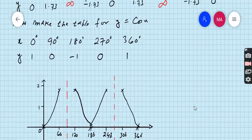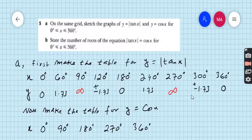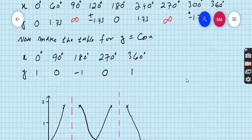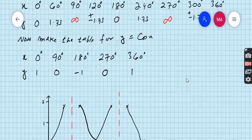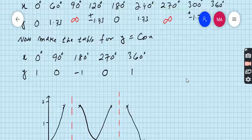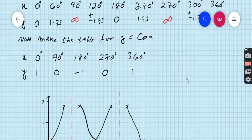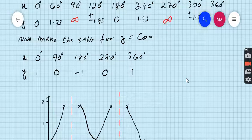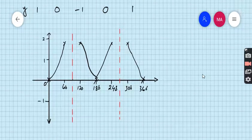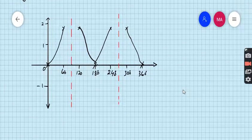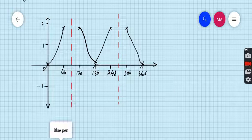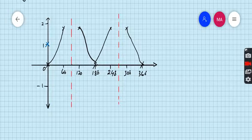But on this grid we have to plot the graph of y equals cos x as well. So for cos x I took 90 degree intervals because we do not have any asymptote in cos function. For 0 the value is 1.